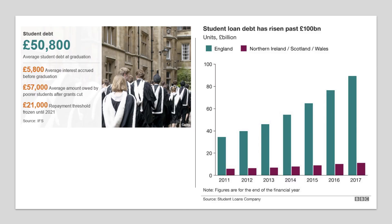Average student debt is now over £50,000, and typically £57,000 for poorer students, particularly after grants were cut. Students repay their debt once in work — what you repay each year and in total depends on what you earn. Currently, you pay 9% of any earnings over £25,000 for 30 years, and if the debt isn't repaid by that point it is written off. Student debt in England has absolutely surged from about £35 billion to nearly £90 billion. By contrast, debt in Northern Ireland, Scotland, and Wales is much lower, since tuition fees there are either zero for Scottish students at Scottish universities or much, much lower.